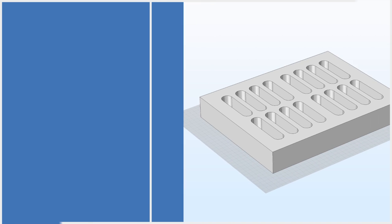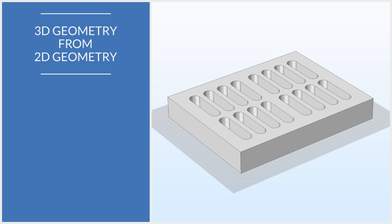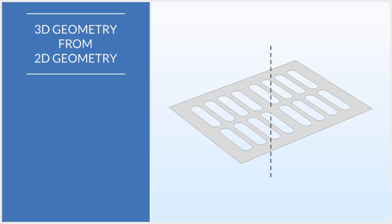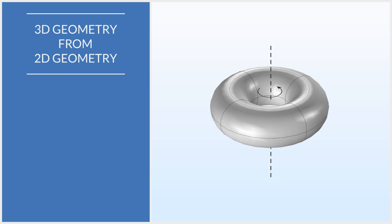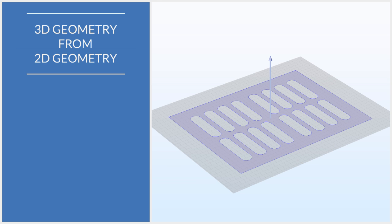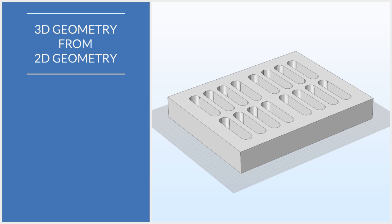When you have a geometry where the cross-section remains the same along an axis, or when the object is rotationally symmetric about an axis, it can be efficient to first create the geometry for the cross-section, and then expand it into a 3D object.